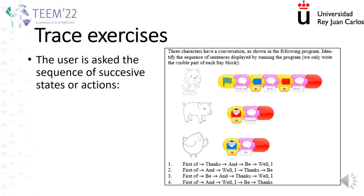A variation of the previous types are trace exercises, where not only the final state is demanded but also the sequence of different states. For instance, in this example, we ask for the sequence of sentences which are said by the three characters.